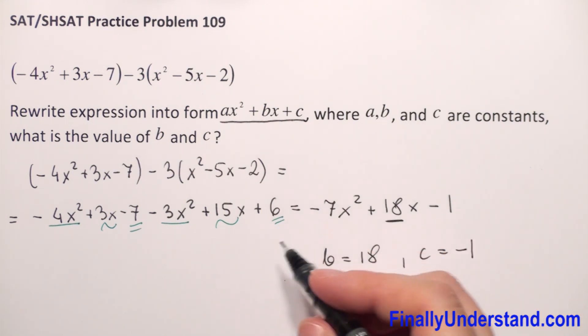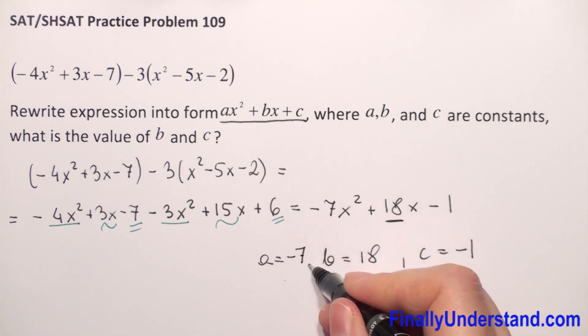If you want, you can always find a, a as coefficient before x squared, so this is negative 7. So this is my solution.